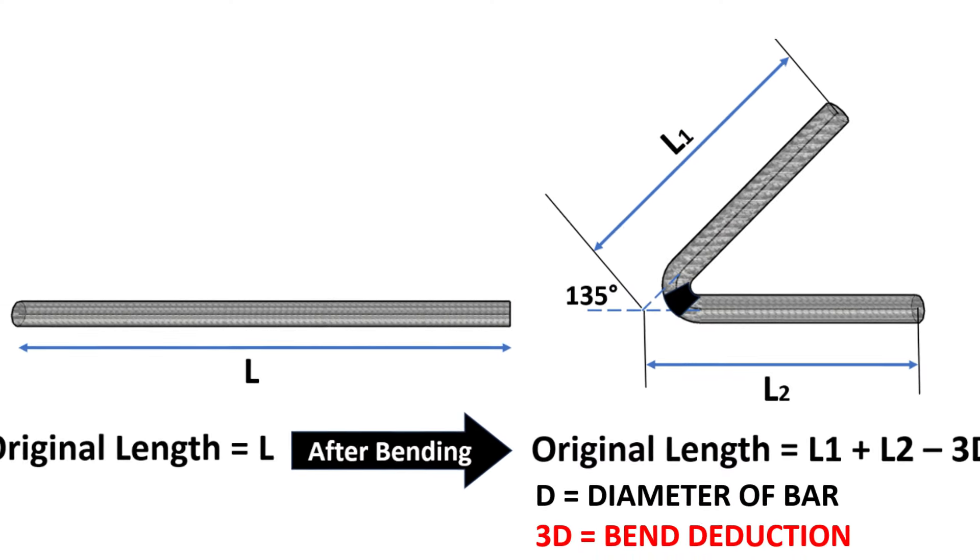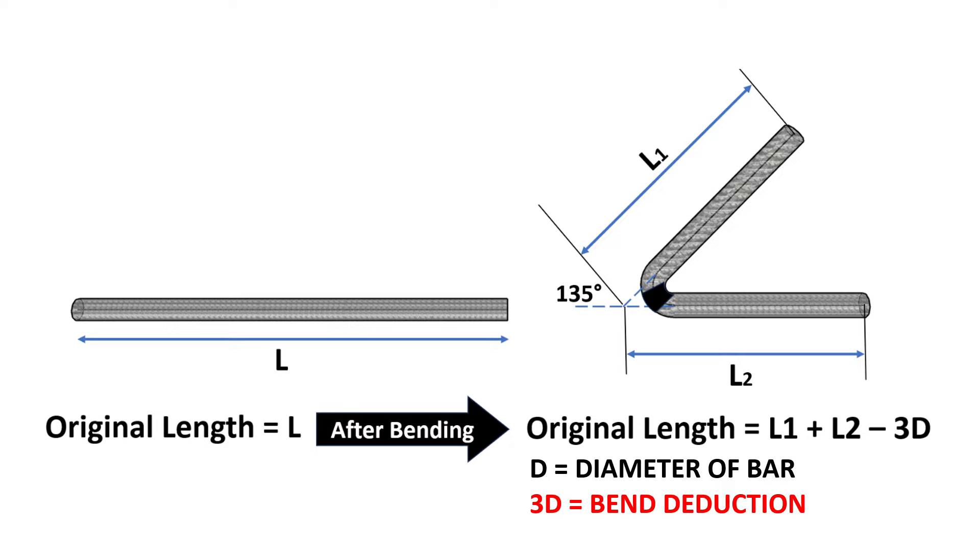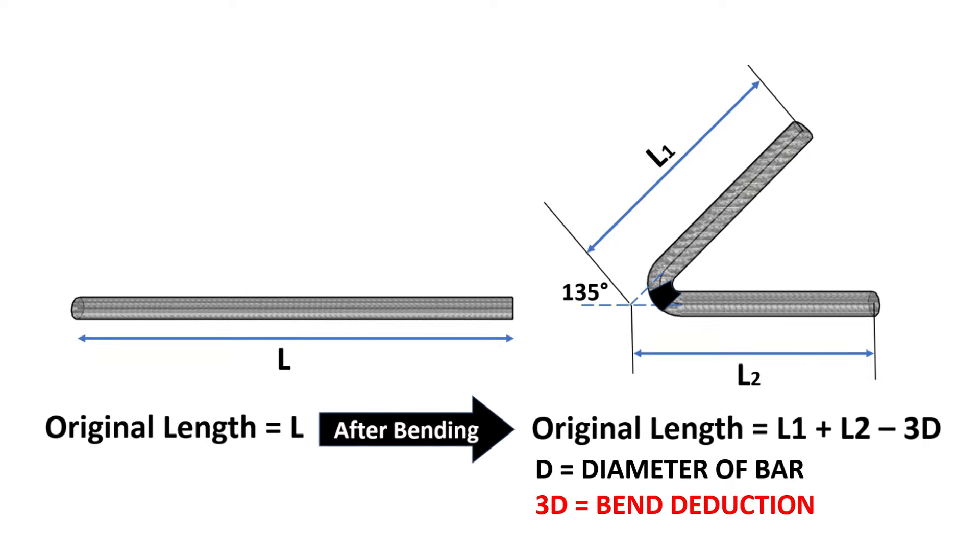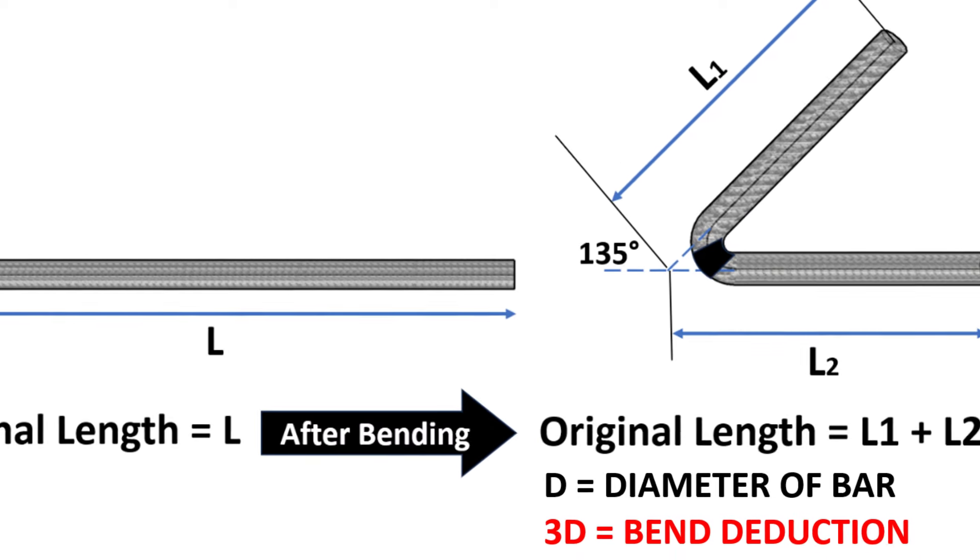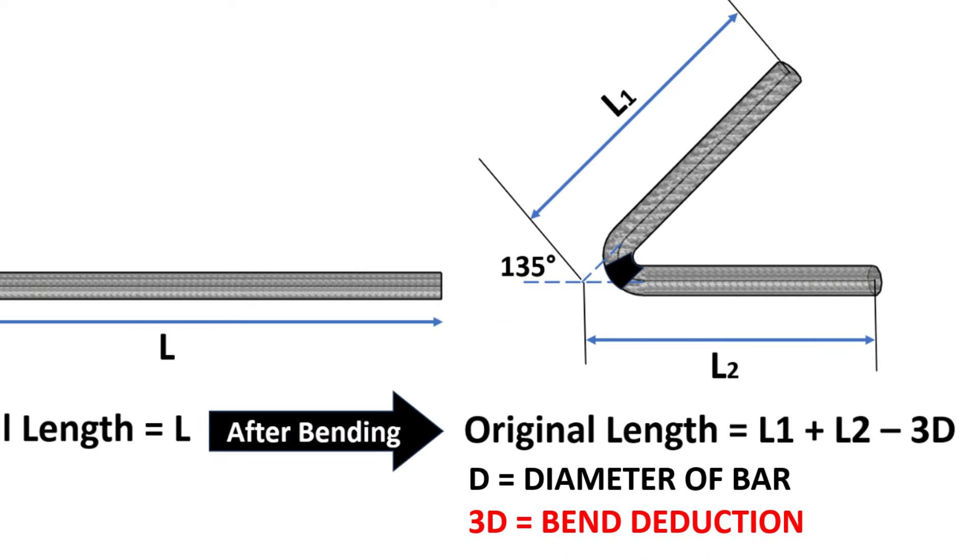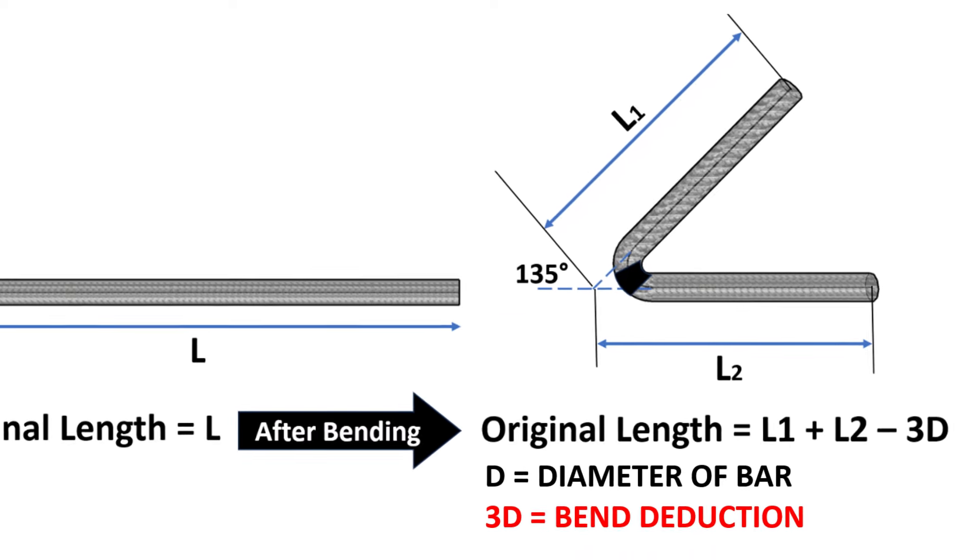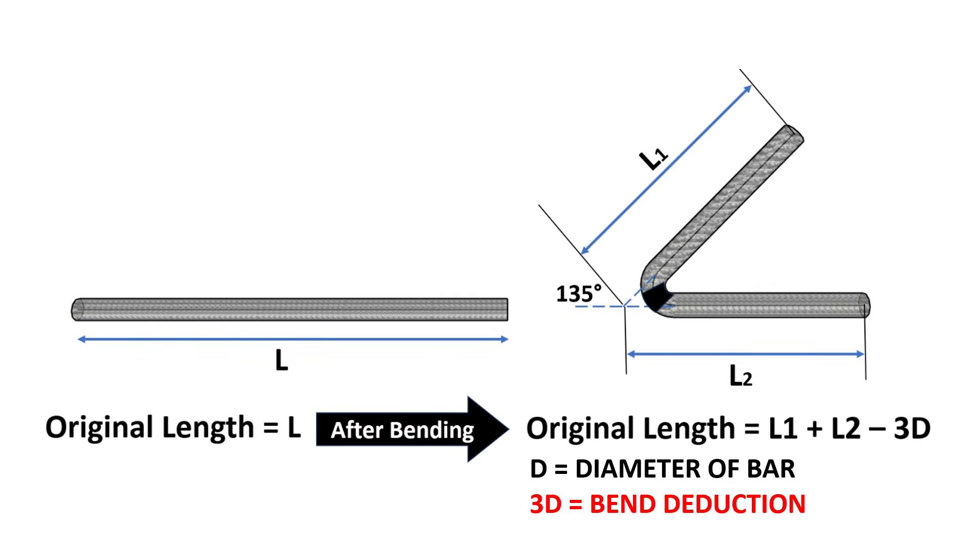Bend reduction is a term used in the context of bar bending schedule for reinforcing steel bars. It refers to the length of the bar that's bent during the bending process, resulting in a decrease in the effective length of the bar.